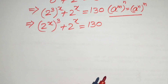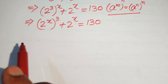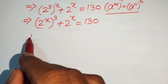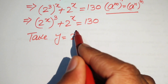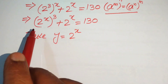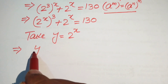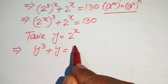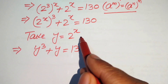We see that 2 to the power of x is the common term, so we substitute y equals 2 to the power of x. Our equation then becomes y cubed plus y equals 130.